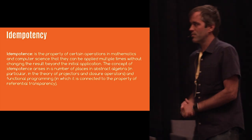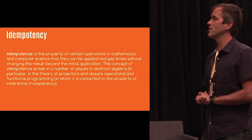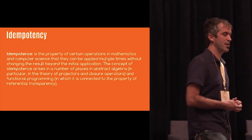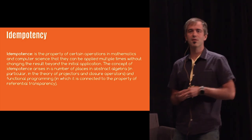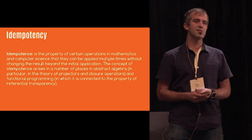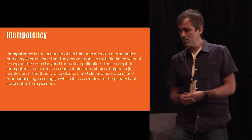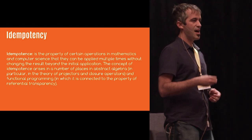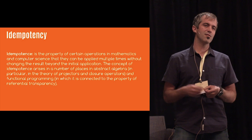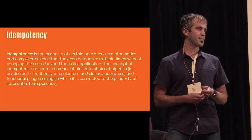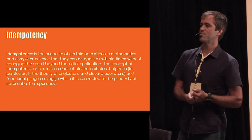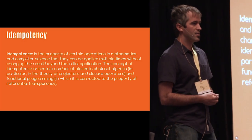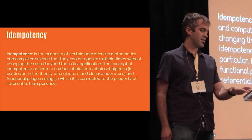Another key concept is idempotency — the property that certain operations can be applied multiple times without changing the result beyond the initial application. If you have an idempotent function, you can run it once, twice, or n times and reach the same desired state. A simple example: a function that says 'add a little water to this glass' is not idempotent — keep running it and eventually the glass spills. But a function that says 'fill the glass with water and fill no more' is idempotent — it can run at any point and reach a desired state without spillage.